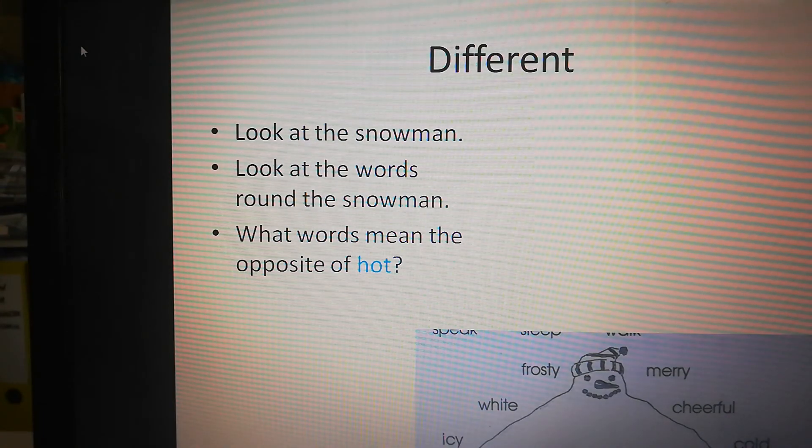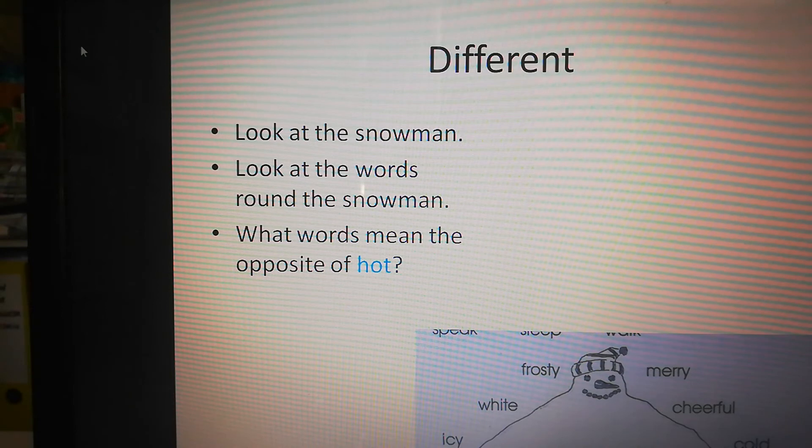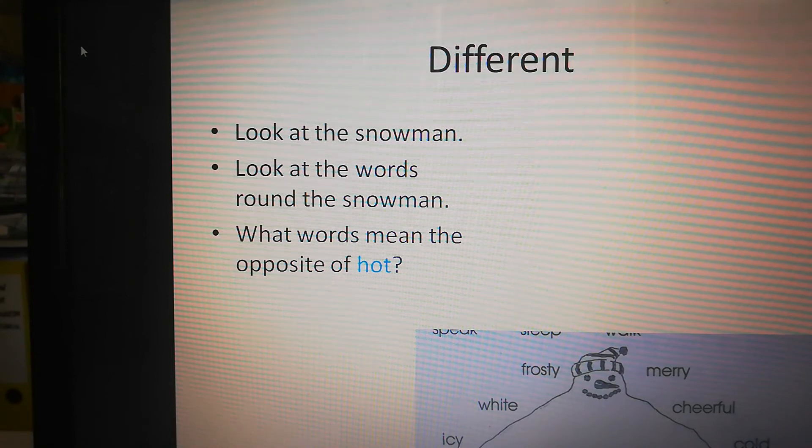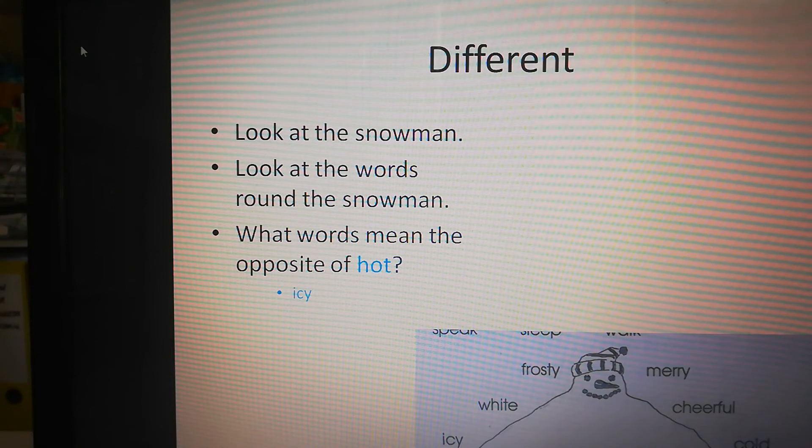Now we're going to do if it's different. It's again like our opposites from the opposite song. Look at the snowman. Look at the words around the snowman. We see icy, white, frosty, merry, cheerful, cold. We want to find the words that mean the opposite of hot. All right. So we're going to write those words inside the snowman. So what is not hot? Very, very cold. Icy. We'll write that inside the snowman.